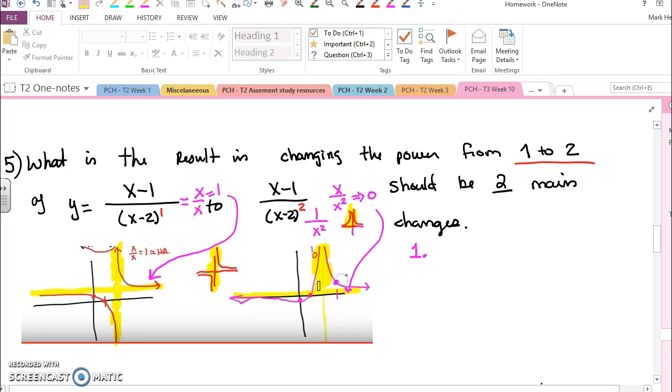And that will always happen whenever there is an even-powered factor in the denominator of a fraction. We will approach the asymptote from the same side, forming something that looks like a volcano.